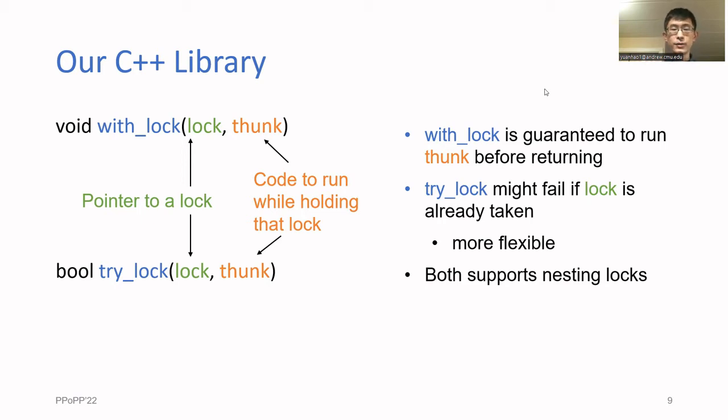An important feature of our library is that it also supports nested locks. This means that the thunk that you pass in can have recursive calls to withLock or tryLock. However, just like for standard locking, you have to watch out for deadlocks. This would manifest itself as helping cycles in our lock-free implementation.